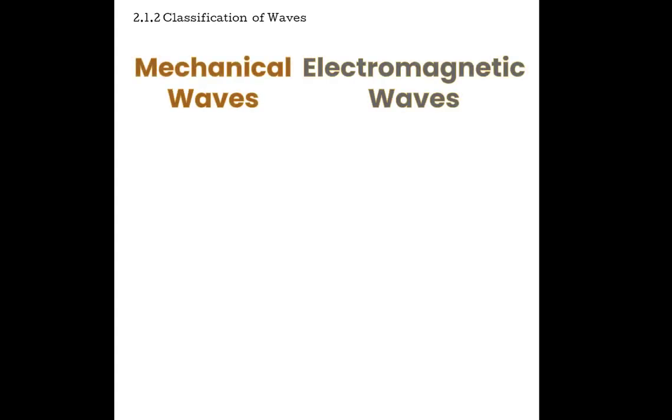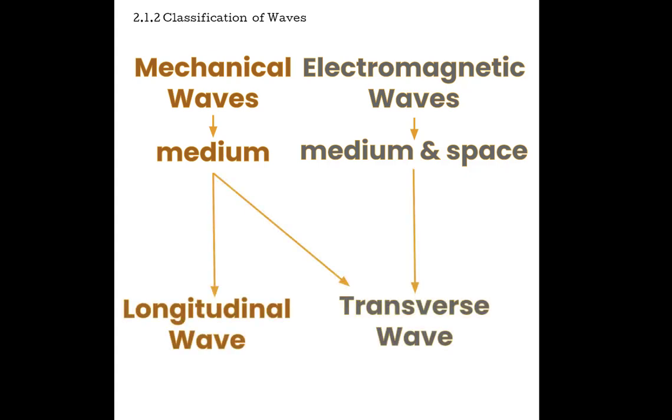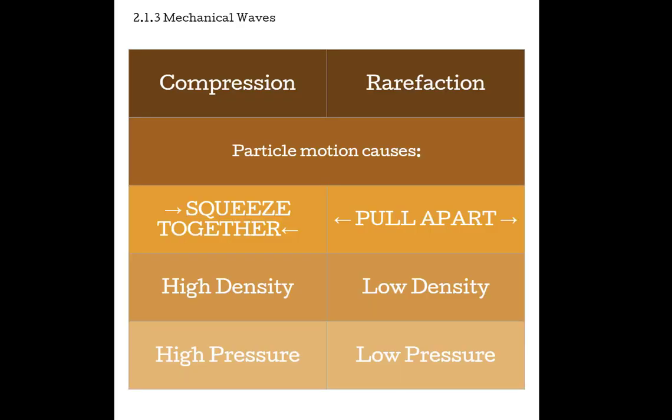So to recap, we have mechanical waves and electromagnetic waves. Mechanical waves require a medium. Electromagnetic waves can travel through medium and space. And mechanical waves can be longitudinal waves or transverse waves, or electromagnetic waves are just transverse. So sound waves are mechanical, longitudinal waves that must interact with a medium.